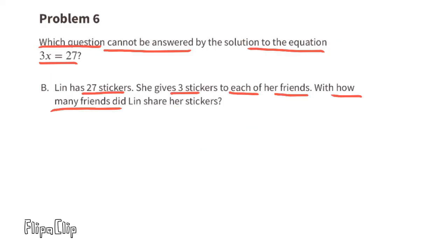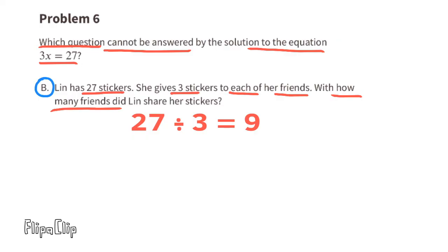Situation b: Lynn has 27 stickers and gives 3 stickers to each friend. With how many friends did Lynn share her stickers? 27 stickers divided by 3 equals 9 friends. Since the variable equals 9, do not select b.